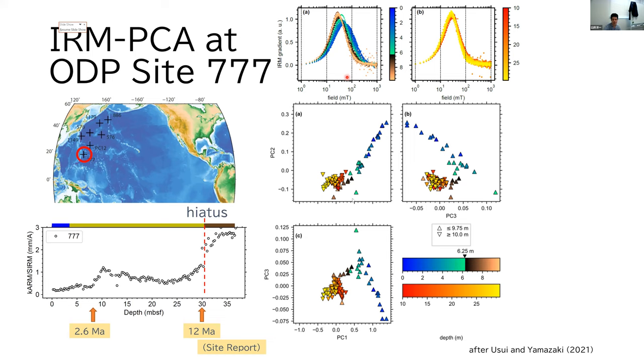The data points in the PC space show a linear trend down to around 6.25 meter. And then a cluster below these depths.